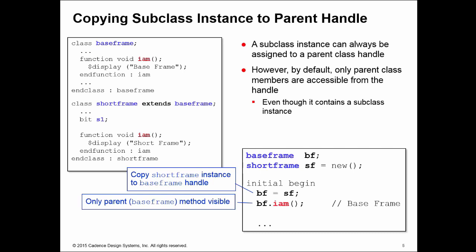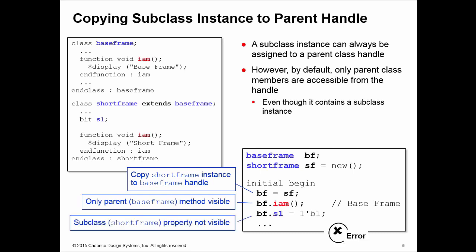Now both handles point to the same area of memory containing a short frame instance. However, if you call any methods or access any properties off the handle, these are resolved according to the handle type. So bf.iam returns the string 'base frame' even though it contains a short frame instance. If you try to access the property s1 off the bf handle, this fails with a compilation error — even though there is a short frame instance in there, you cannot access its properties via the base frame handle.